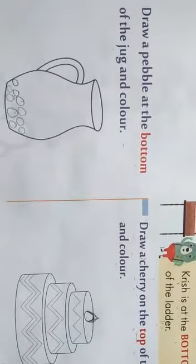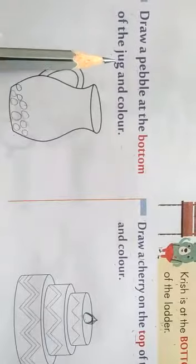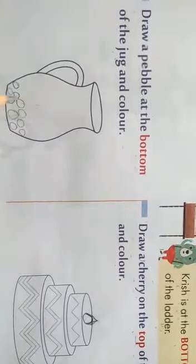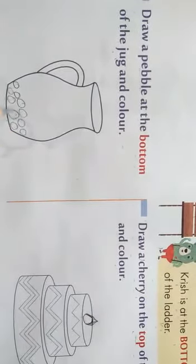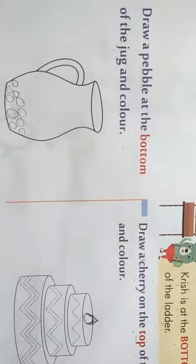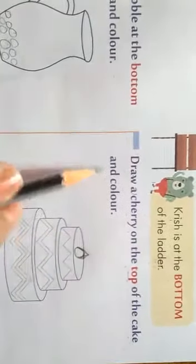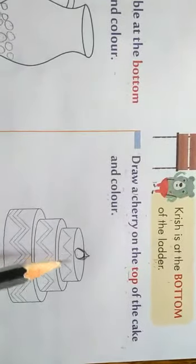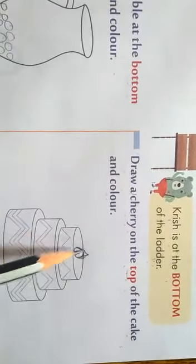Look at the question. Draw a pebble at the bottom of the jar — aapko pebble banana hai, neche ki side banana hai. We draw it and color it also. Draw a cherry on the top of the cake and color. Aapko cake pe cherry banana hai, top mein, matlab upar. So we draw it.